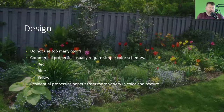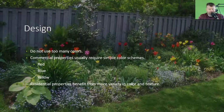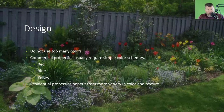Commercial properties usually require simple color schemes. They like red and blue, possibly white for American colors, and yellow — but they stick to traditional colors, probably no pastels. Residential properties benefit from more variety in color and texture. Commercial property managers and business owners like it simple and neat. Their only reason for using color in the landscape is to draw potential customers' eyes to the color bed and then up to their signage.